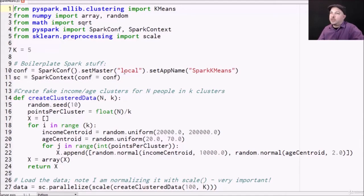And I'm going to go ahead and set up a local SparkConf just running on my own desktop. I'm going to set the name of my application to spark k-means and create a SparkContext object that I can then use to create RDDs that run on my local machine.